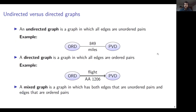In graphs we make the distinction between undirected and directed graphs. An undirected graph is a graph where all edges are undirected — all edges are unordered pairs. We saw that in the last graph with cities and distances between them. If we have two cities, ORT and PVD, and a distance between them, it doesn't matter which one is first. We can call the edge ORT-PVD or PVD-ORT; the distance is the same either way.